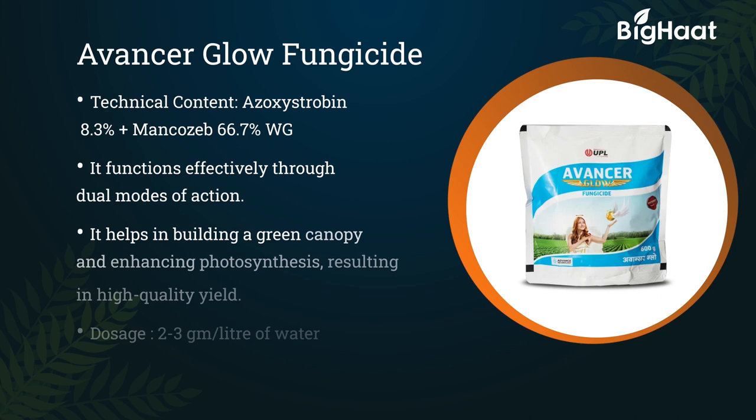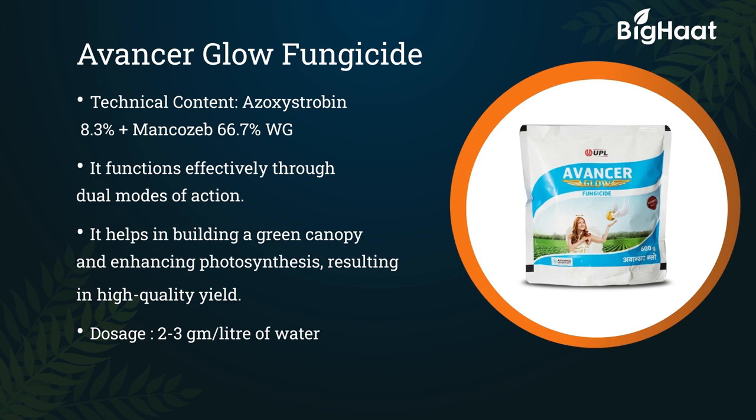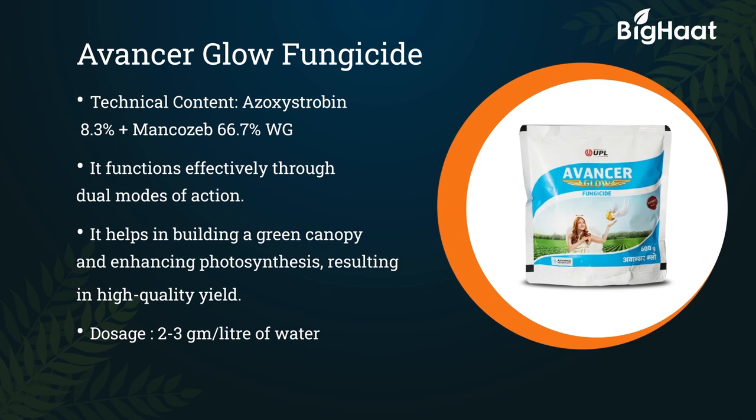Avancer Glow fungicide contains Azoxystrobin 8.3% and Mancozeb 66.7% WG. It functions effectively through dual modes of action, helps in building a green canopy and enhancing photosynthesis, resulting in high quality yield. Its dosage is 2 to 3 gram per liter of water.